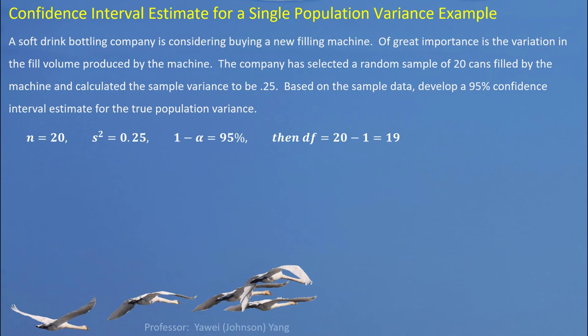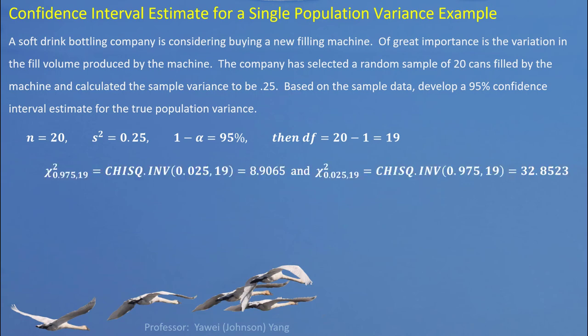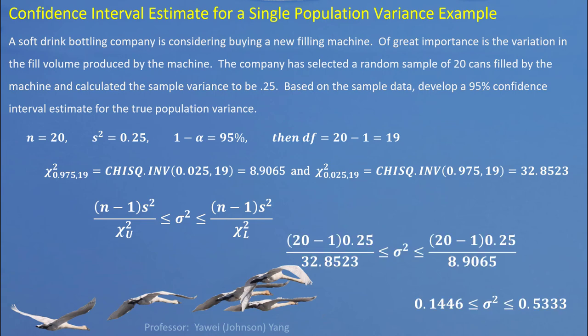20 minus 1 gives degrees of freedom of 19. The confidence level gives us a 5% significance level, cut in half for each tail — 2.5% each. From that, we figure out the lower and upper chi-square critical values. Putting all this information into the formula, we find the confidence interval for population variance is between 0.1446 and 0.5333.